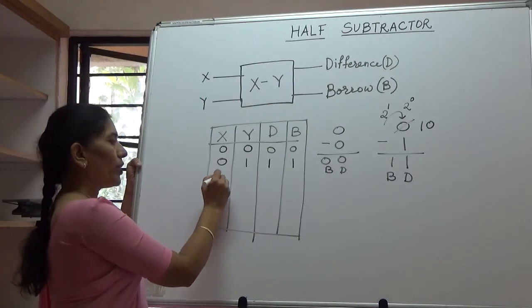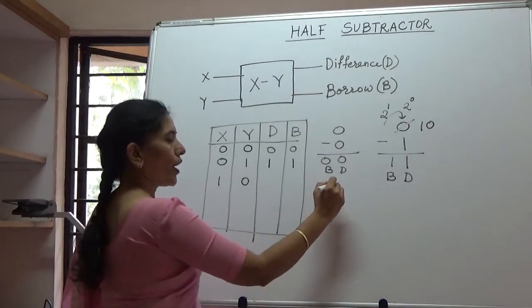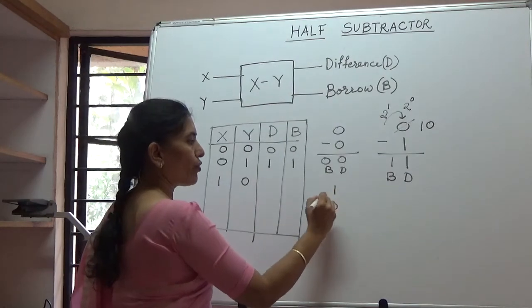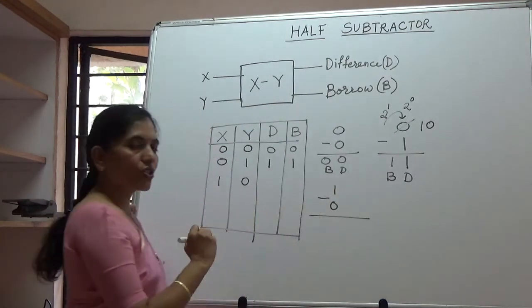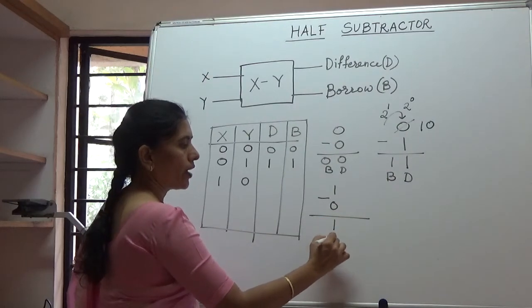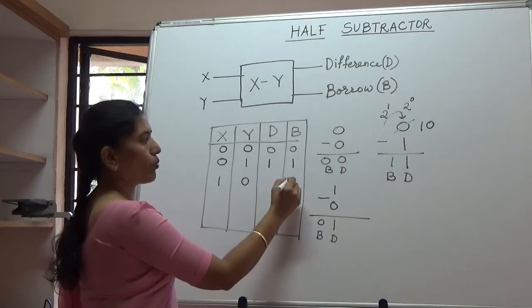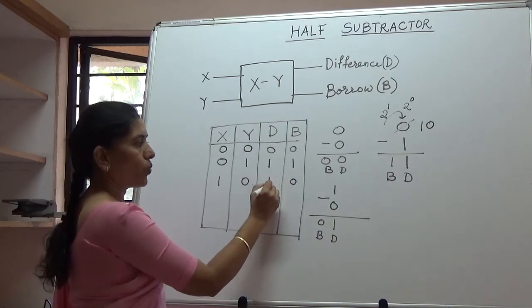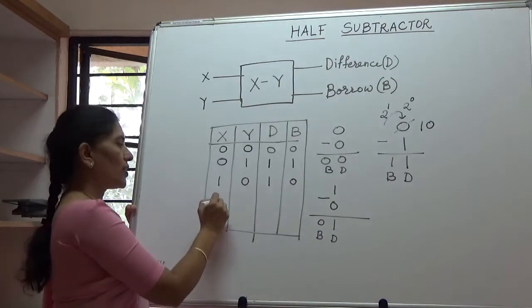The next combination is 1, 0. If a 0 is subtracted from a 1, it is a straightforward subtraction. No borrow is required, so the borrowed bit is 0, the difference is 1, and the last is 1, 1.